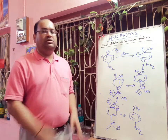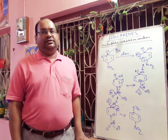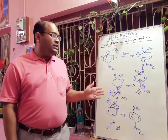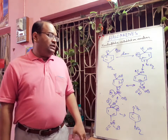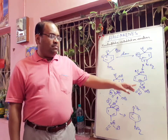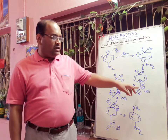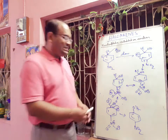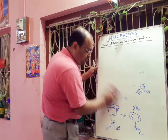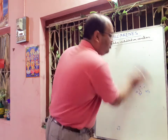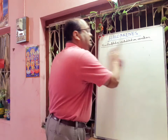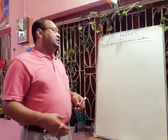In the case of ortho substitution, the same mechanism is followed. But for the meta isomer, the negative charge on the carbon atom cannot be stabilized by resonance with the nitro group at the meta position. Therefore, the rate is very slow for meta-nitrochlorobenzene, whereas for ortho and para it is fast due to extended delocalization.